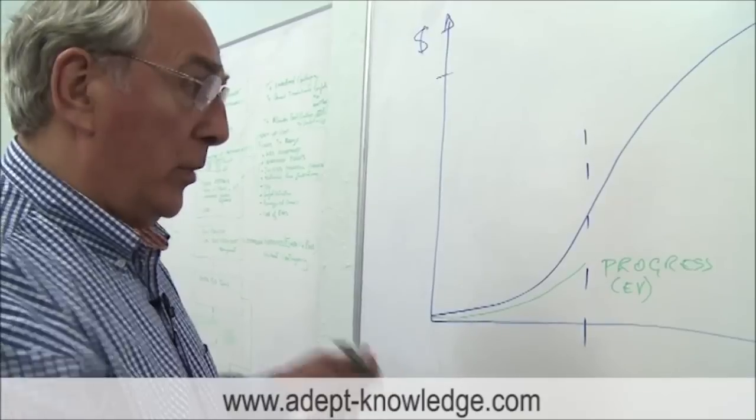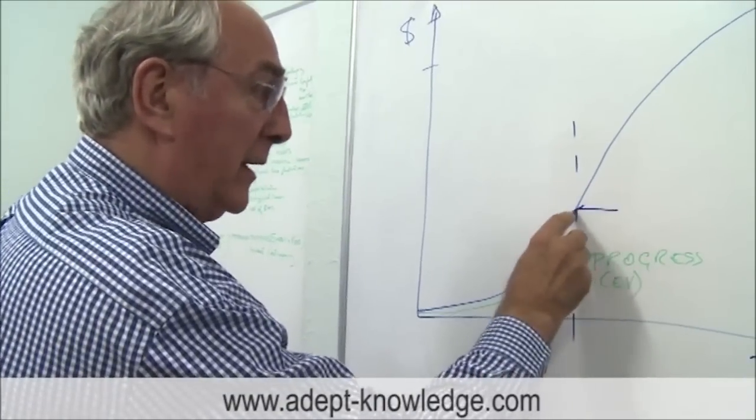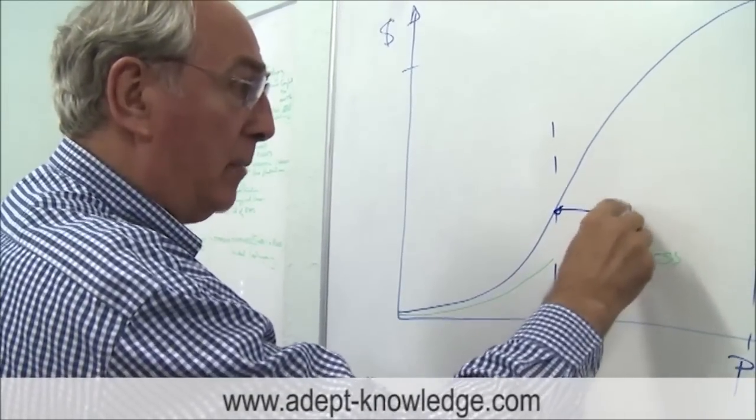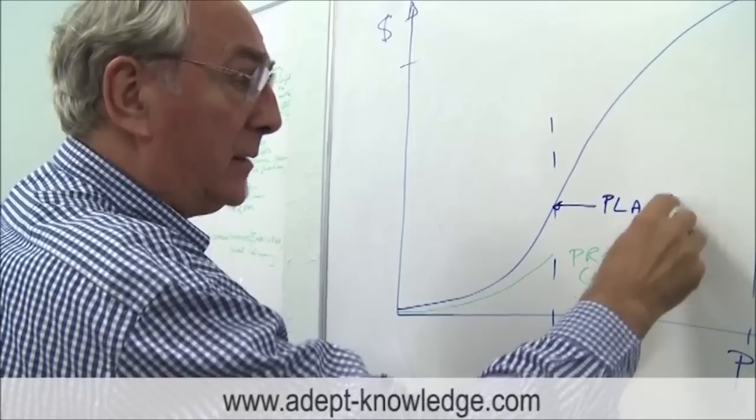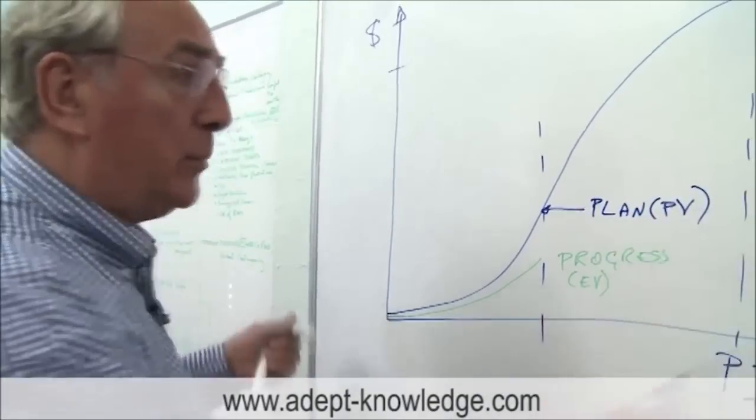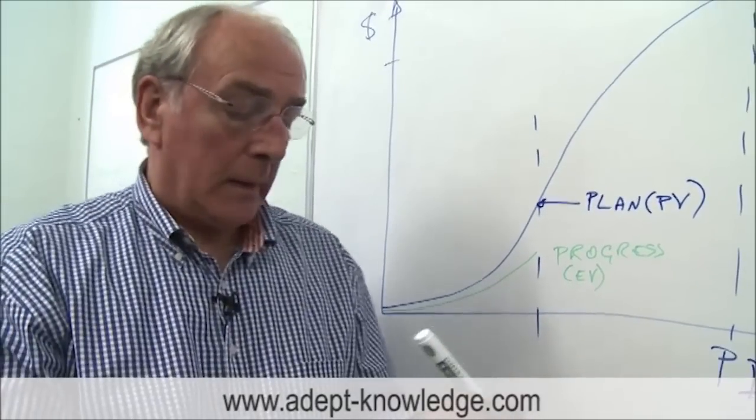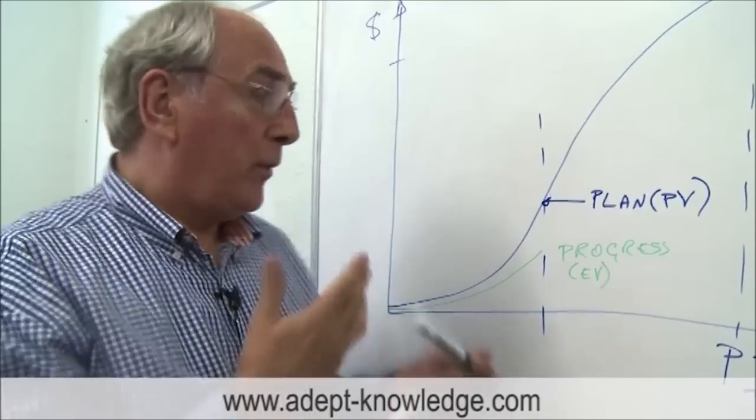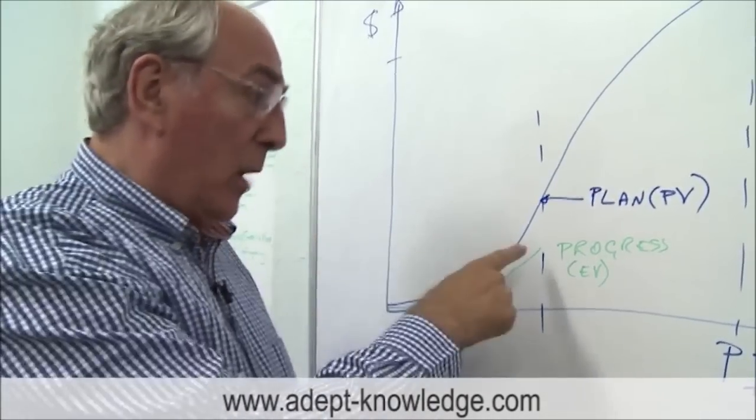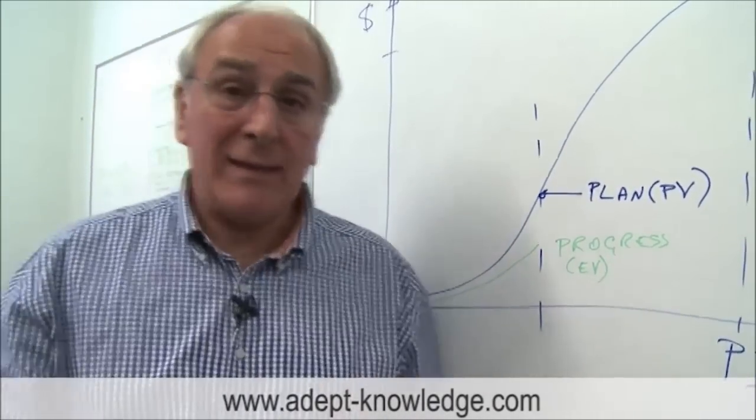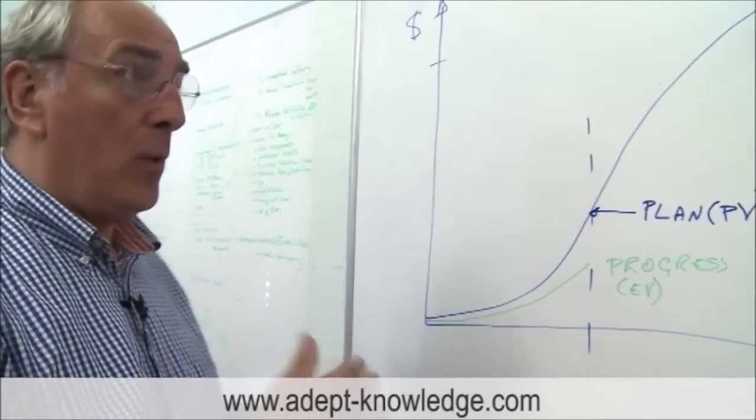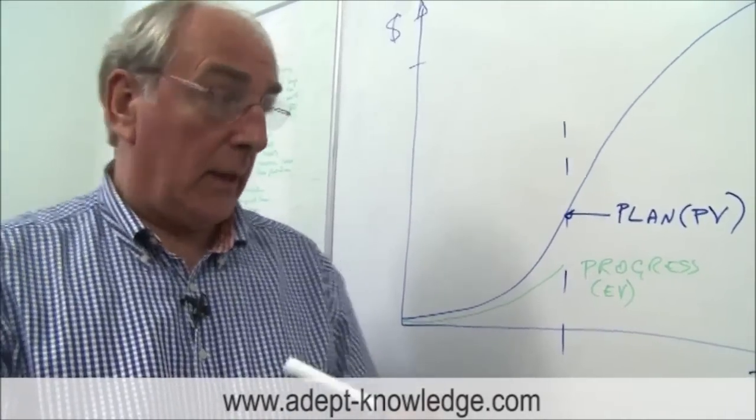We compare that with this point here on our baseline which is if you like our plan, that's sometimes called the planned value. I'm just putting PV there. So we immediately know this is where we are in relation to where we plan to be, that's pretty vital and from there we can do some forecasting things.